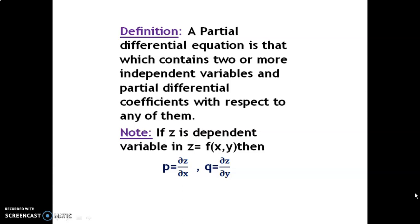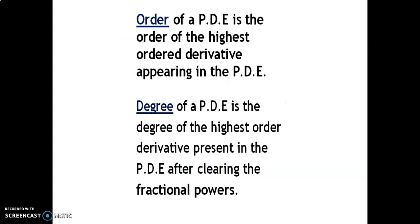Definition: A partial differential equation is that which contains two or more independent variables and partial differential coefficients with respect to any of them. Note: if z is the dependent variable in the equation z = f(x,y), here x and y both are independent variables. Then p = ∂z/∂x and q = ∂z/∂y are two standard substitutions, where p is the partial derivative of z with respect to x and q is the partial derivative of z with respect to y. The order of a PDE is the order of the highest ordered derivative appearing in the PDE. The degree of a PDE is the degree of the highest ordered derivative present in the PDE after clearing the fractional powers.